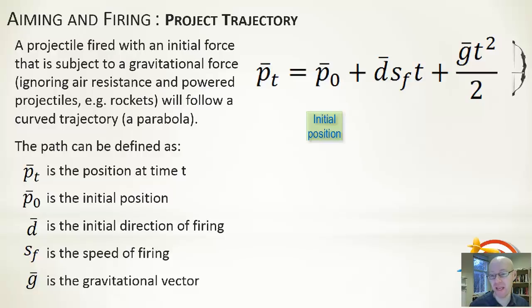The second component, d*sf*t, is simply the movement due to the normal velocity of the projectile. d is the initial direction of firing, the angle in which we fire it. Sf is the speed of firing. If we take a direction of movement and combine it with the speed, that's the velocity. So d*sf is basically the velocity that the projectile has, and t takes into account how long it's been moving in that particular direction with that speed. If t equals zero, that component goes to zero. If t equals one, that's one second's worth of movement due to the velocity.